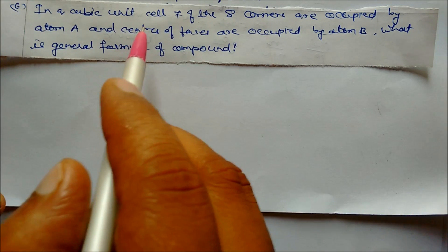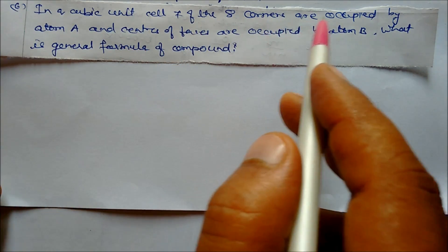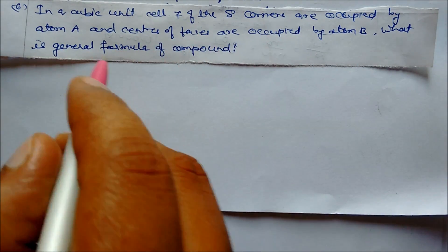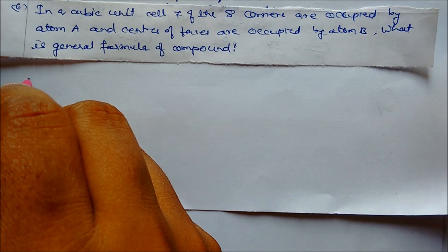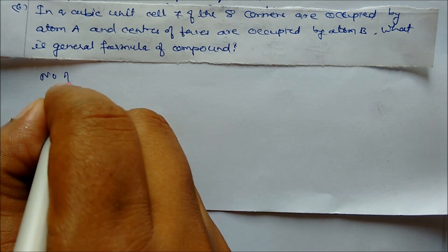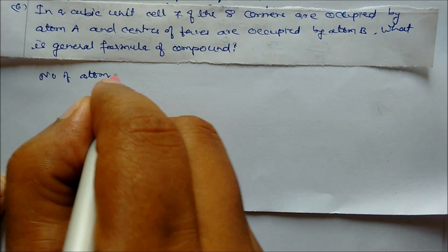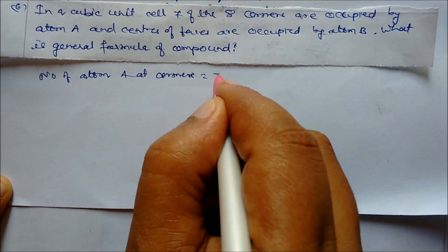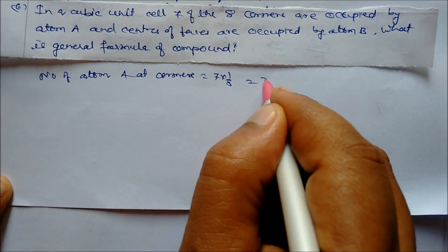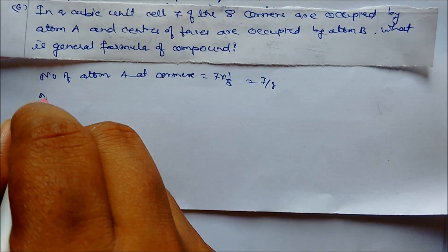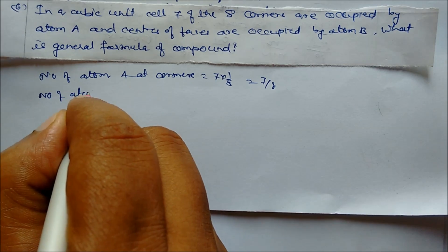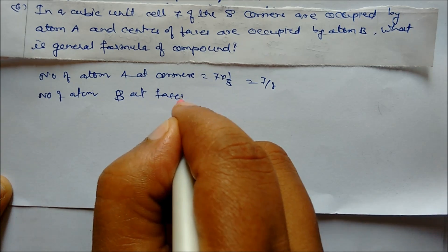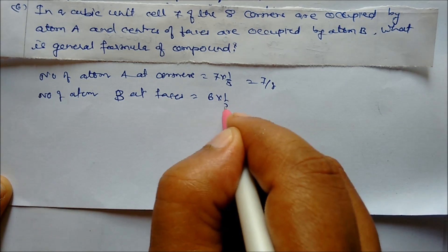Next: In a cubic unit cell, seven of the eight corners are occupied by atoms A and all face centers are occupied by atoms B. What is the general formula of the compound? The number of A atoms at corners = 7 × 1/8 = 7/8. The number of B atoms at face centers = 6 × 1/2 = 3.